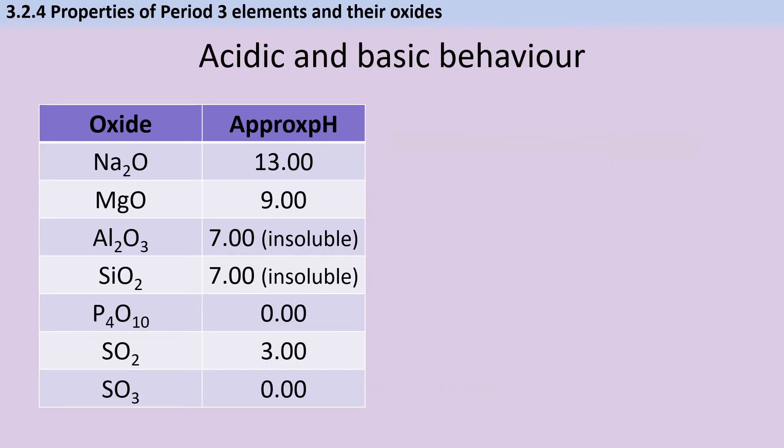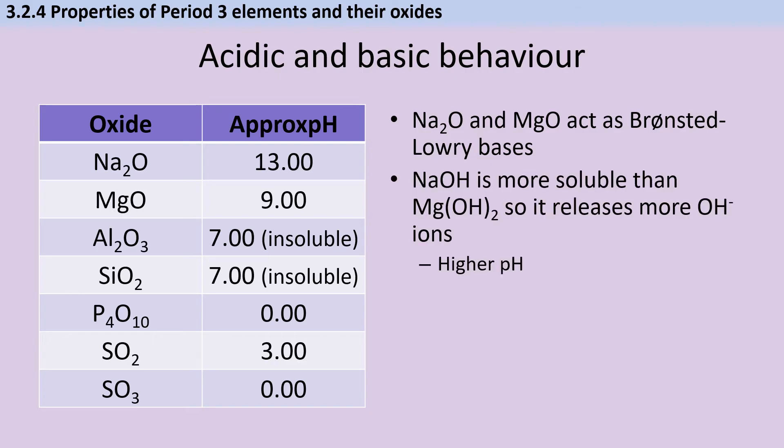The general rule of thumb is that when metallic oxides dissolve in solution, they form alkalis, whereas non-metallic oxides dissolve to form acids. Sodium oxide and magnesium oxide are both able to act as Bronsted-Lowry bases, accepting protons or hydrogen ions in order to make hydroxides. Sodium hydroxide is more soluble than magnesium hydroxide due to a weaker electrostatic force of attraction between the two ions. Therefore it dissolves more easily and therefore it releases more hydroxide ions, and this leads it to have a higher pH, even if they're the same concentration, and even though magnesium hydroxide is still alkaline.